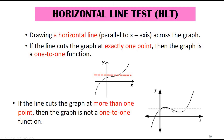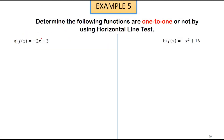If the line cuts the graph at more than one point — for example, one, two, and three intersection points — then the graph is not a one-to-one function. Let's look at Example 5.